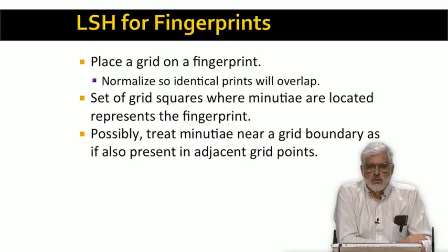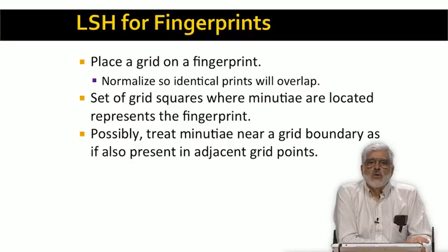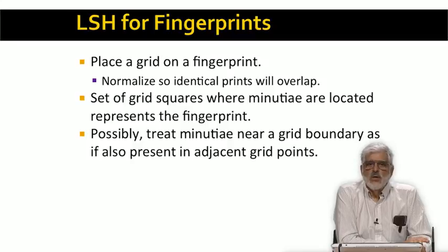The problem is that the resulting matrix is not sparse. The grid cannot be too fine or it will be unclear where minutiae belong. As a result, the matrix whose rows are the grid squares and whose columns are the fingerprint sets will not be sparse. That means minhashing will not work very well. Each minhash will have relatively few different values, so we don't get a good distribution into a large number of buckets when we do the LSH. We're going to have to twist things a little bit to get LSH to work.